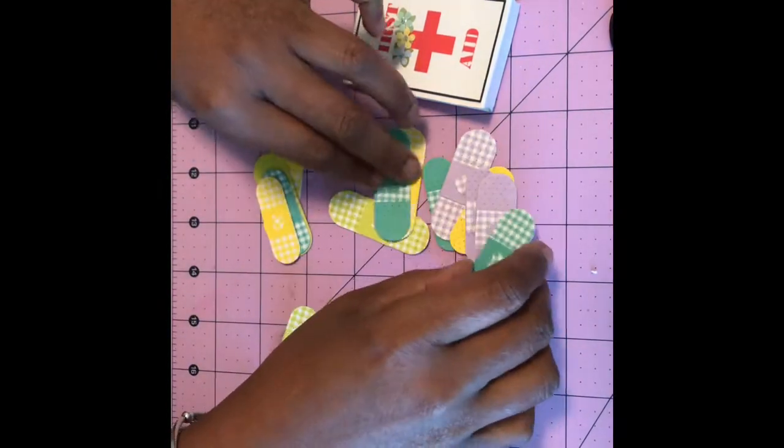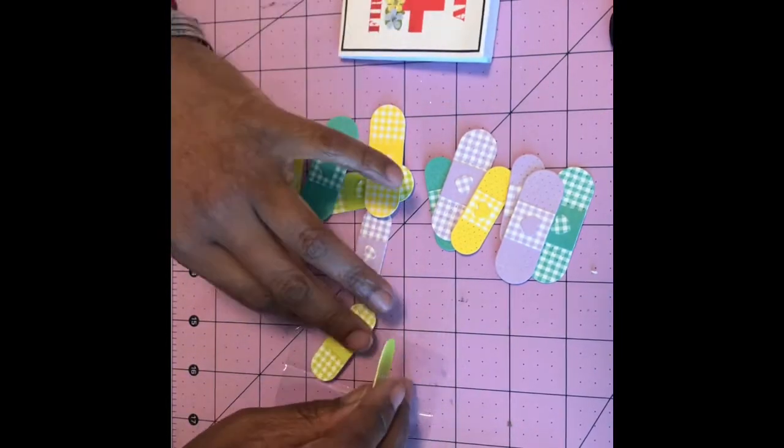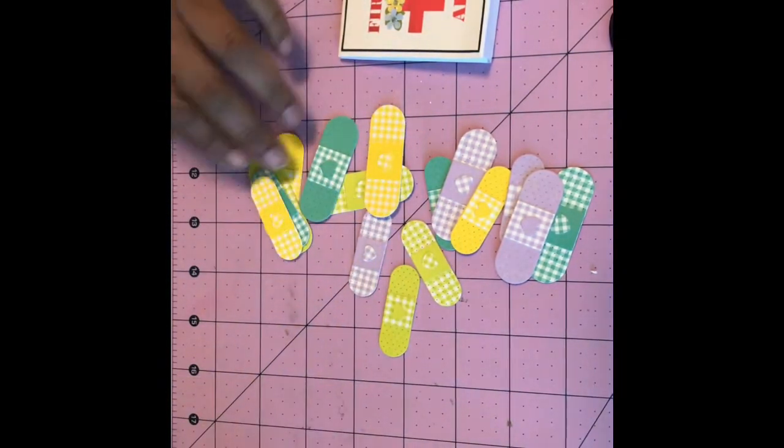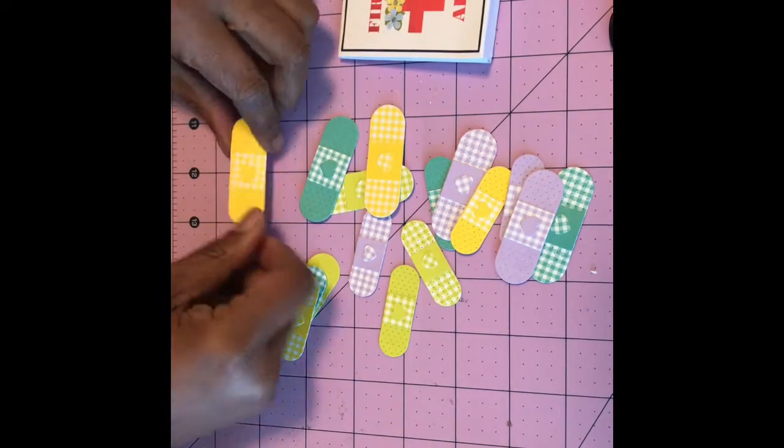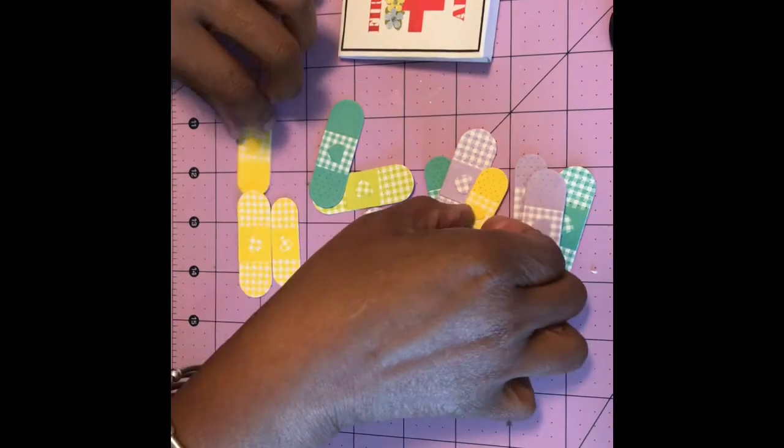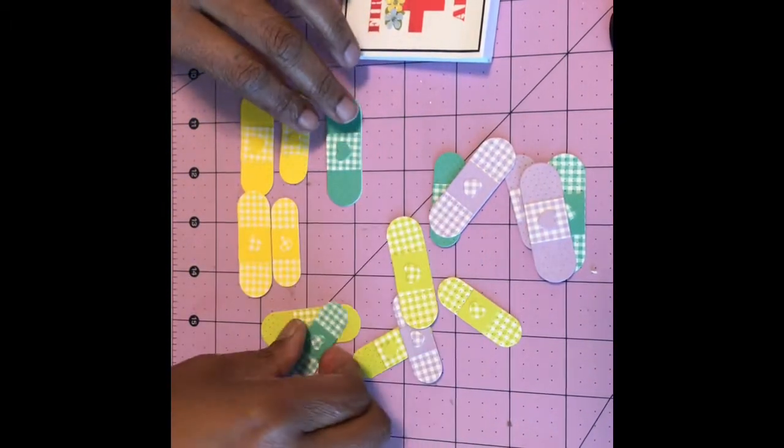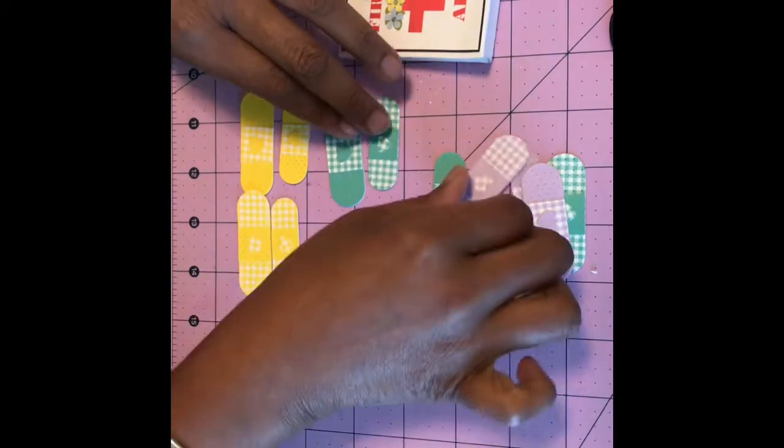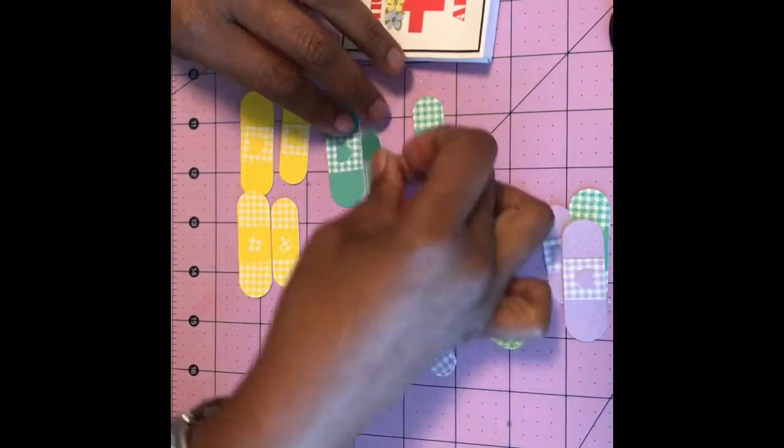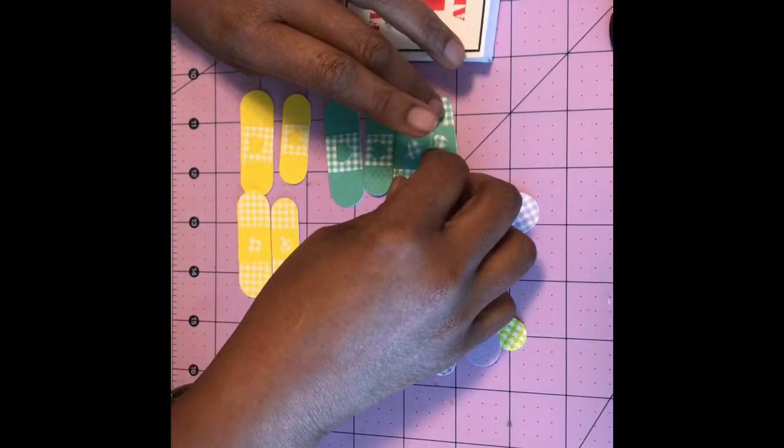But anyway, here are the bandages. I love these bandages. These are cut with the die I purchased from Aliexpress, also using the authentic checks and dots paper. And this paper is double sided so I cut some for each side because I just loved the way they came out, the contrast.